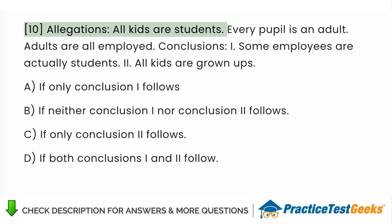Allegations: All kids are students. Every pupil is an adult. Adults are all employed. Conclusions: I. Some employees are actually students II. All kids are grown-ups A. If only conclusion I follows B. If neither conclusion I nor conclusion II follows C. If only conclusion II follows D. If both conclusions I and II follow